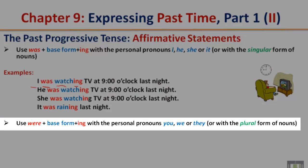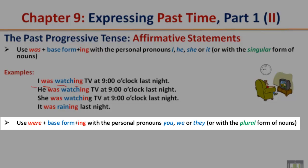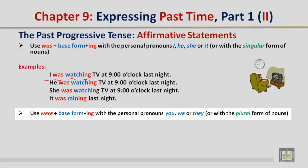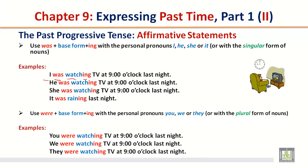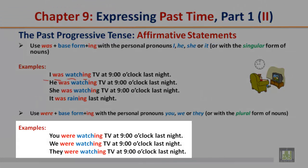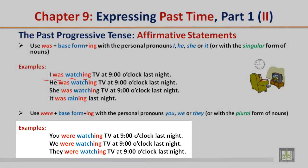Use 'were' plus the base form plus '-ing' with the personal pronouns you, we, or they, or with the plural form of nouns. You were watching TV at 9 o'clock last night. We were watching TV at 9 o'clock last night. They were watching TV at 9 o'clock last night.